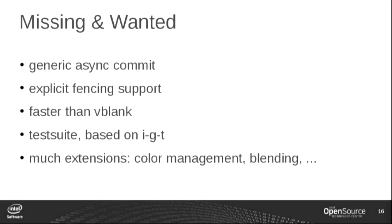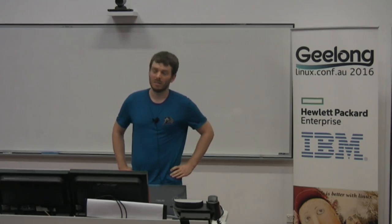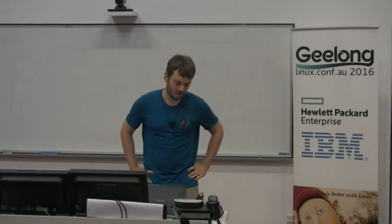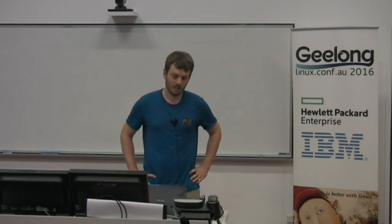There are still a few things missing. It's hard to write generic async support that's both useful and not massively complex, so right now all drivers need to implement async commit themselves, generally using a worker queue. Android has explicit fencing for buffer synchronization and that's about to happen. We want support to update display state faster than the refresh rate, useful for benchmarking, games, and VR. We're working on generic test cases for the Atomic interface based on Intel GPU tests, plus lots of work on extensions for blending and better color management.